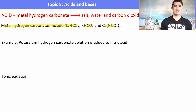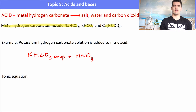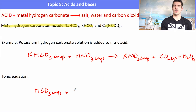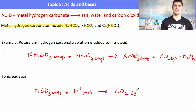If an acid reacts with a metal hydrogen carbonate, the reaction is virtually the same as with metal carbonates. Metal hydrogen carbonates include sodium hydrogen carbonate and potassium hydrogen carbonate. For example, potassium hydrogen carbonate reacts with nitric acid to form potassium nitrate, carbon dioxide, and water. Removing spectator ions — potassium and nitrate — gives the ionic equation: HCO₃⁻(aq) + H⁺(aq) → CO₂(g) + H₂O(l). This is another neutralization reaction that releases energy.